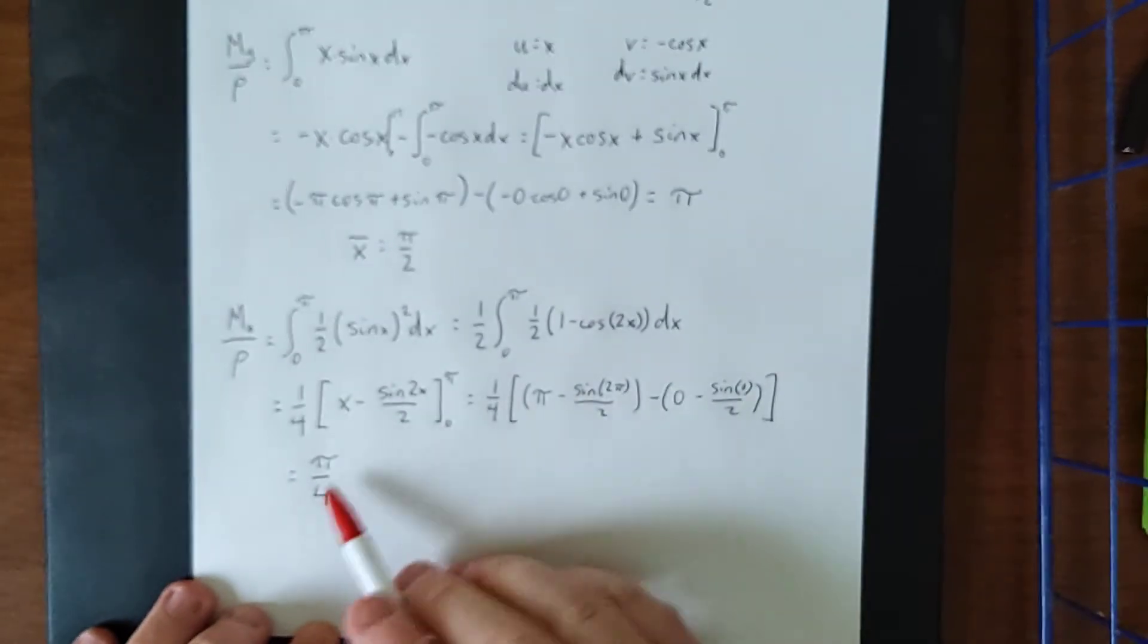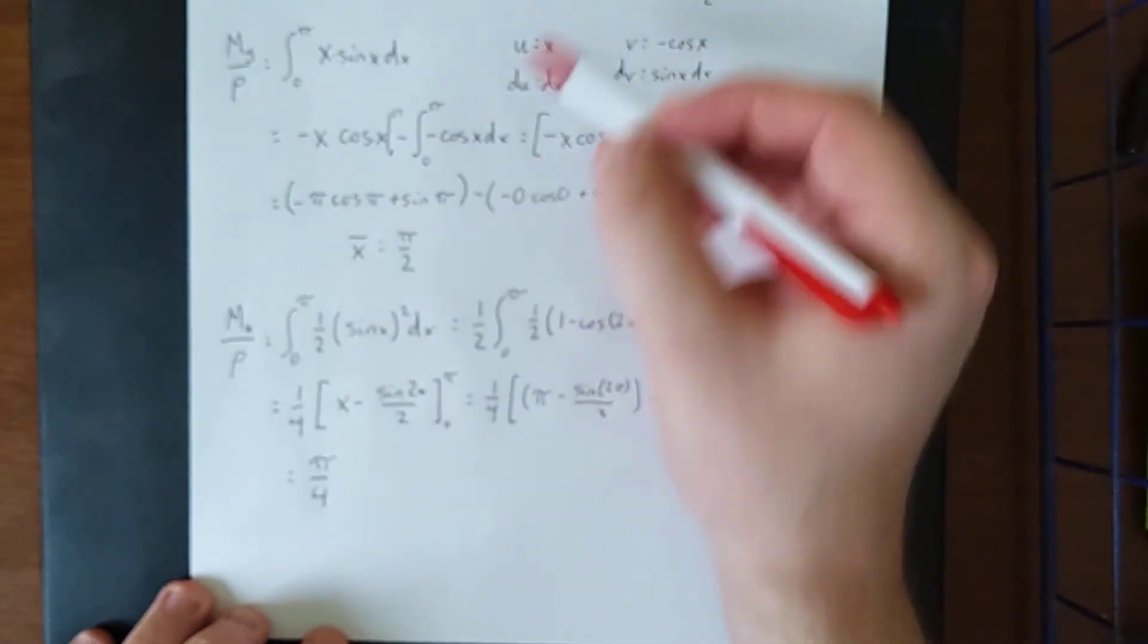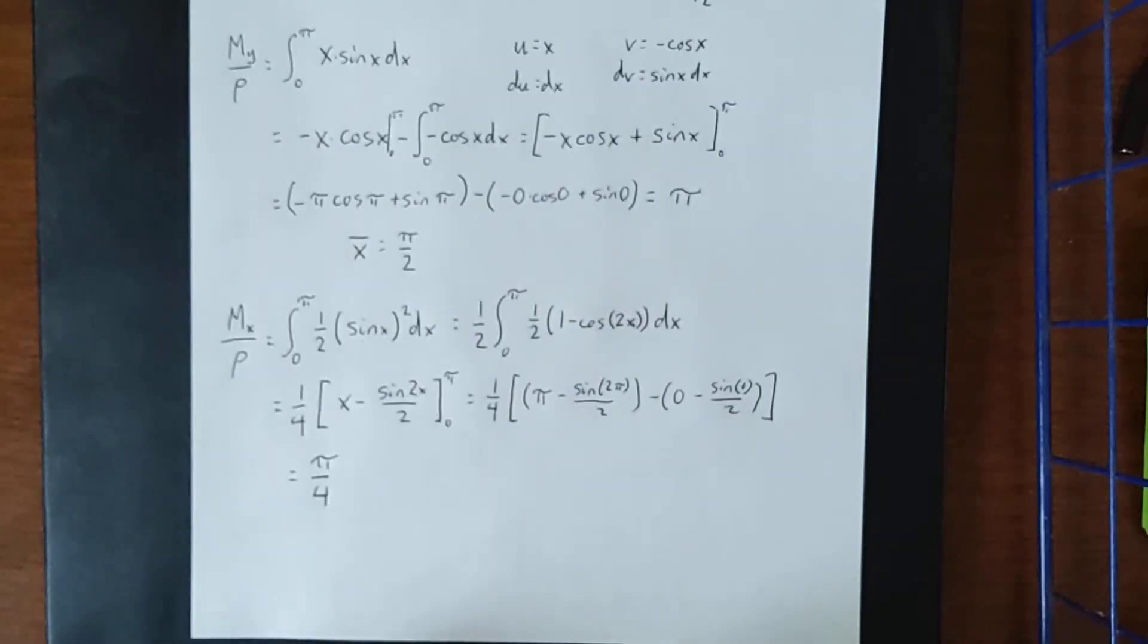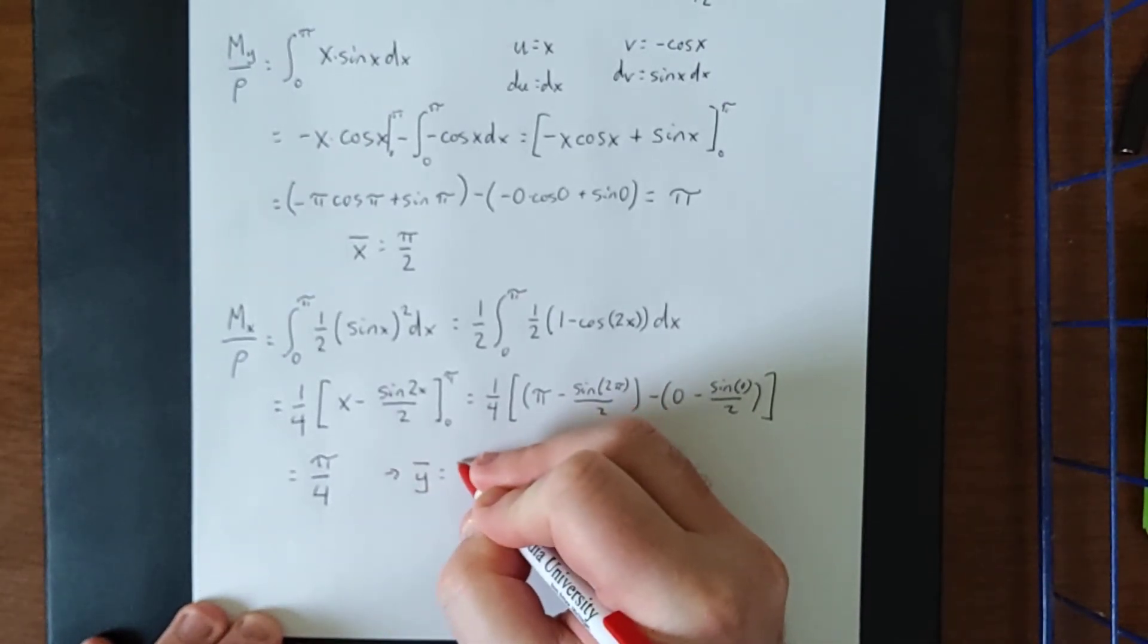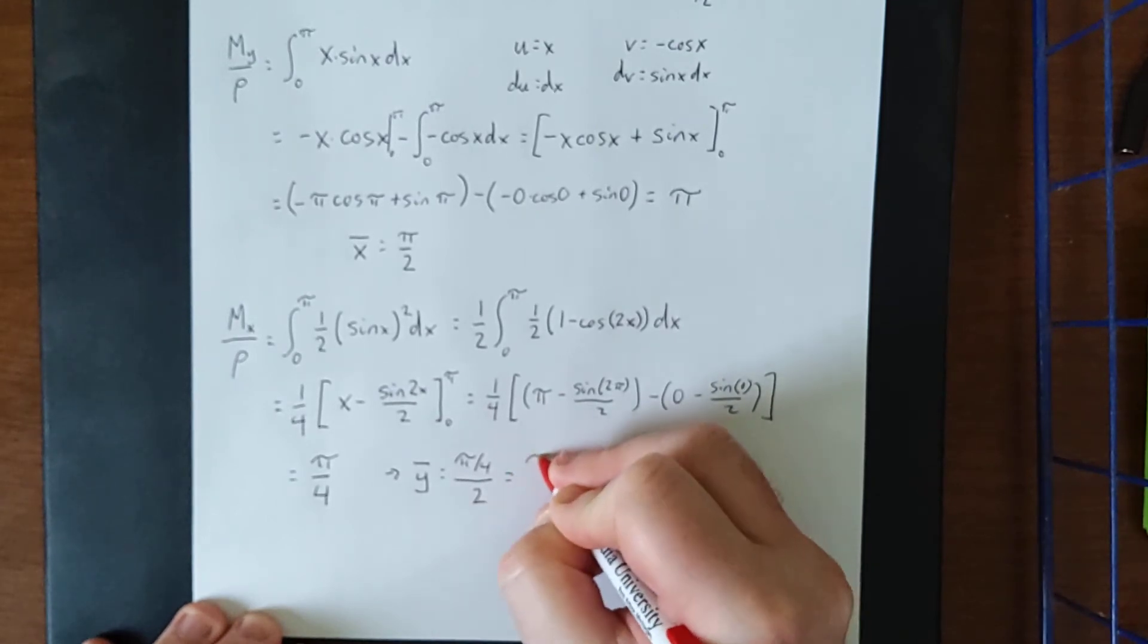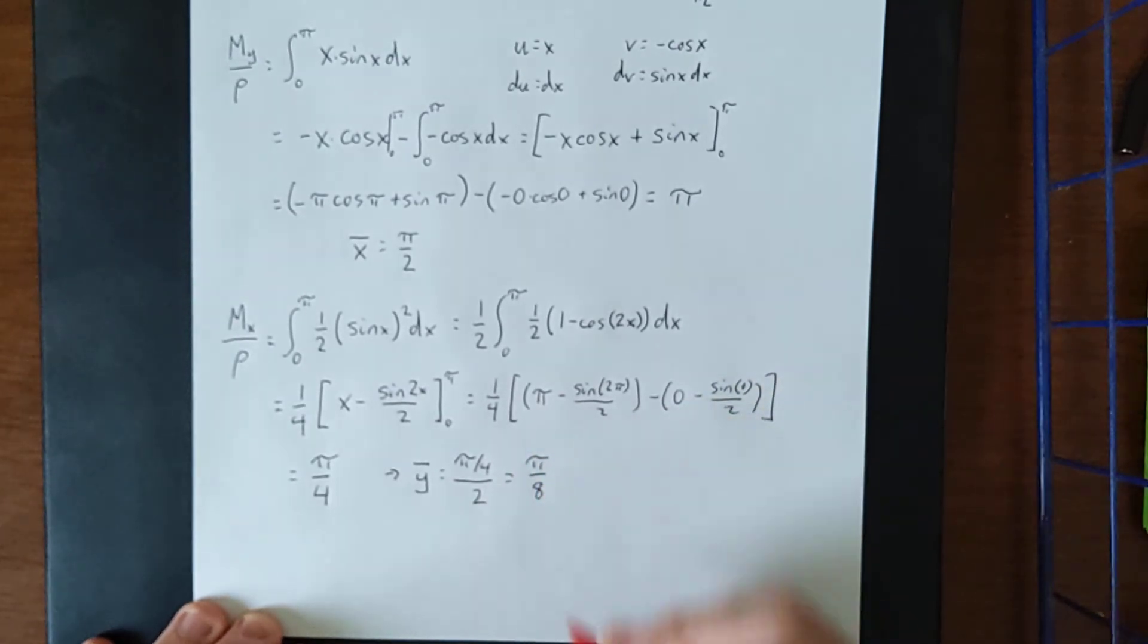Now if I take that value and I divide by the original area, that'll give us our y-coordinate of the center of mass. Our coordinate is going to be pi over four divided by two, which will simplify to pi over eight.